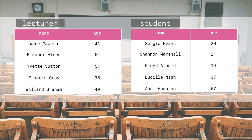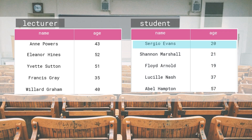First we'll get to know the tables that we'll use in our queries. They are very similar to each other. The first one is named 'lecturer' and contains the lecturers that teach at an imaginary university. The table has two columns: name and age. For instance, there is a lecturer called Ann Powers who is 43 years old. The second table is named 'student' and contains the students that study at our university. Again, this table has two columns: name and age. The first student is called Sergio Evans and is 20 years old.